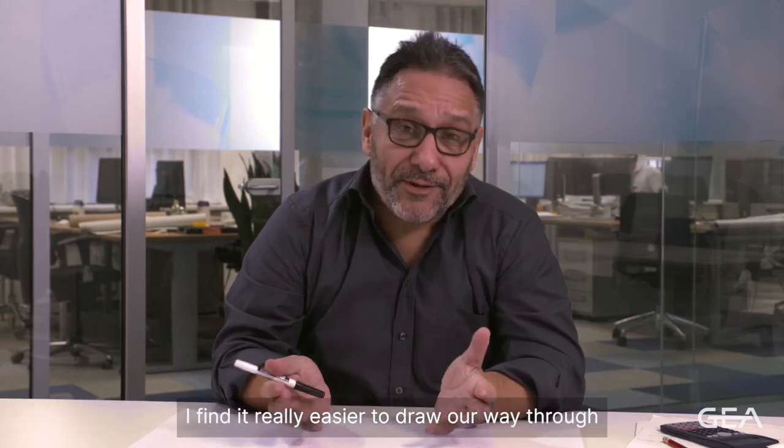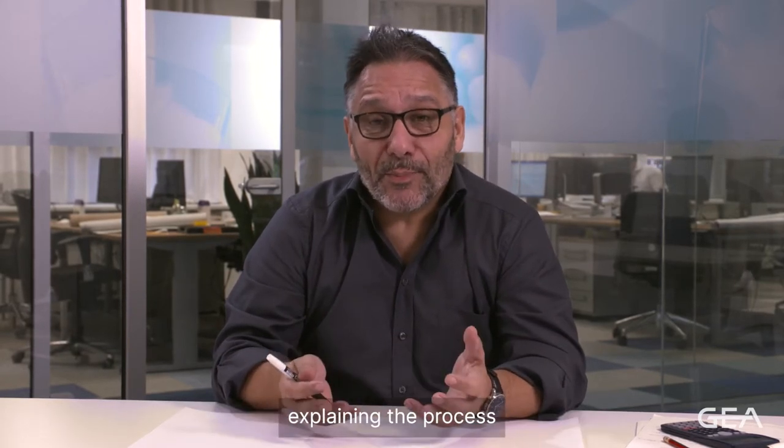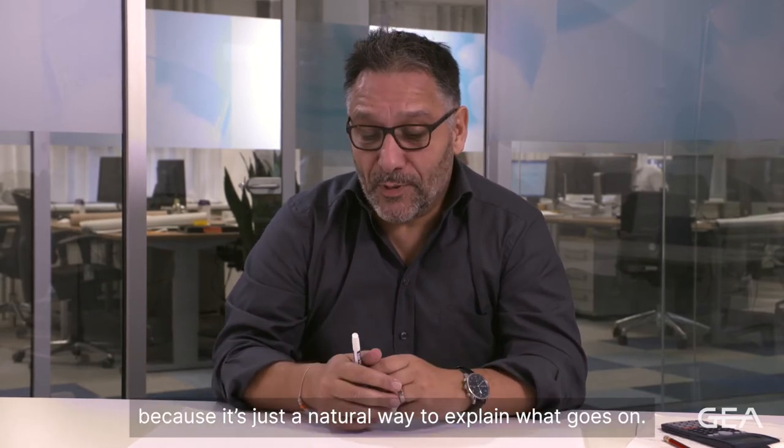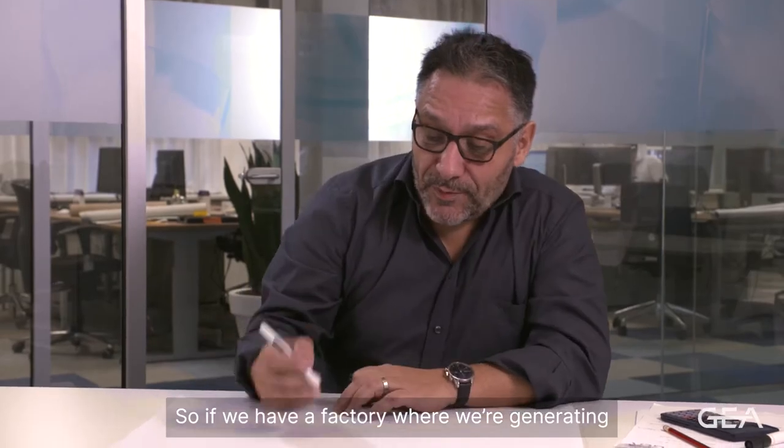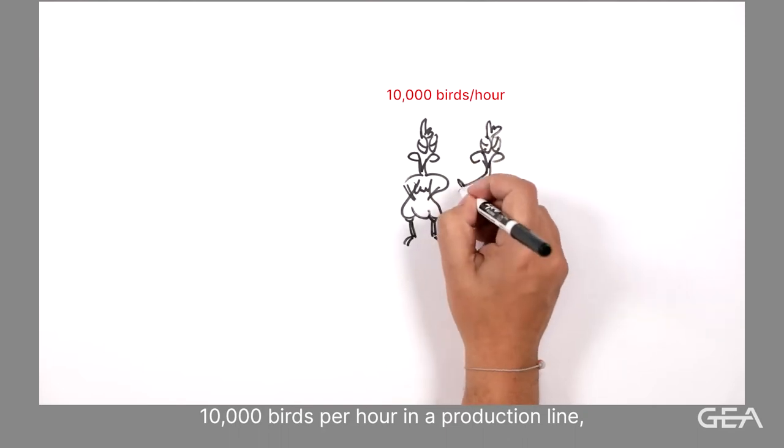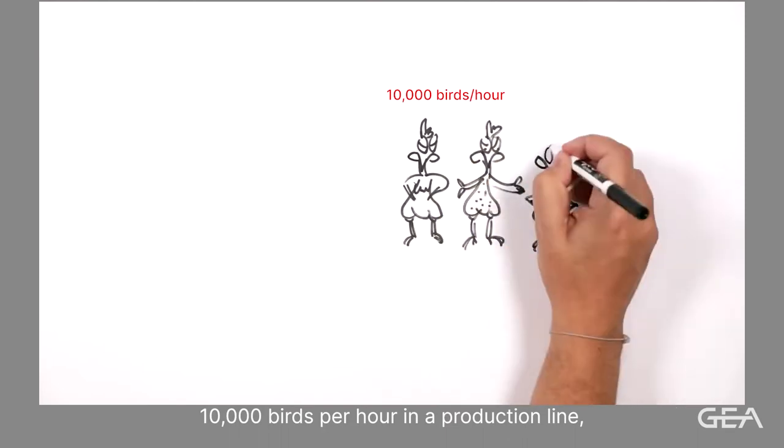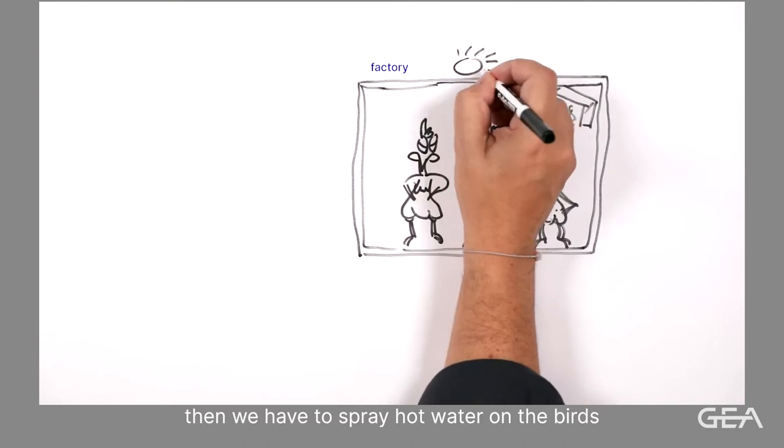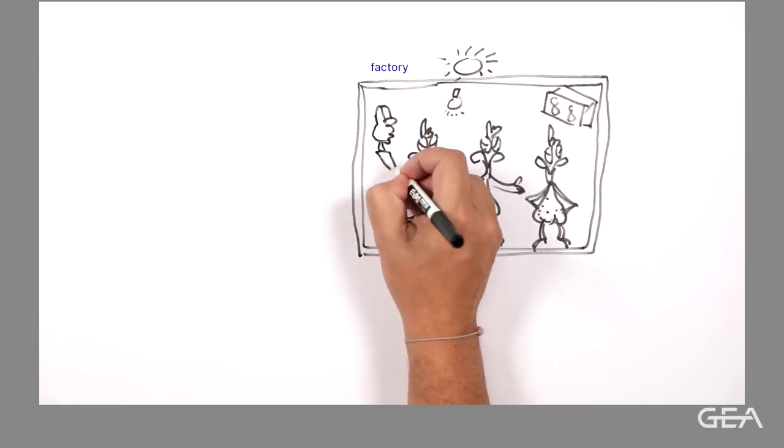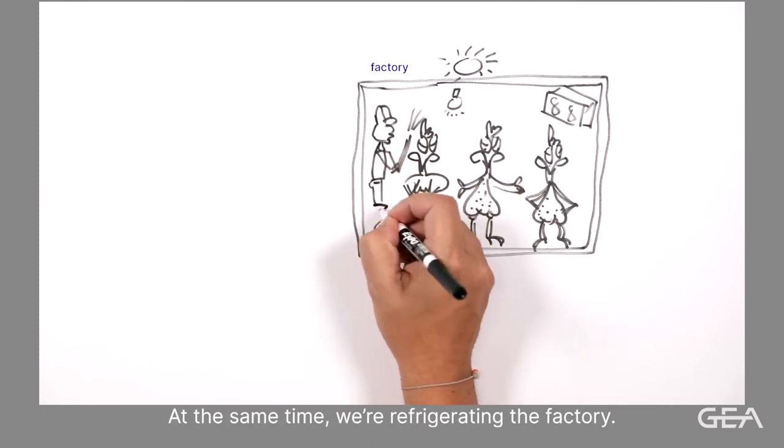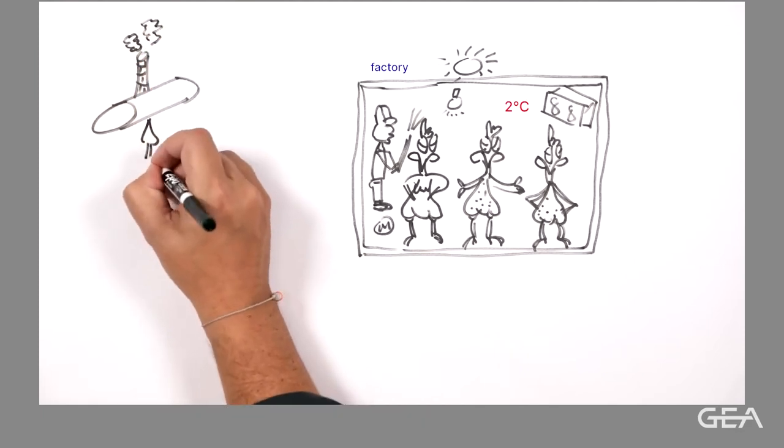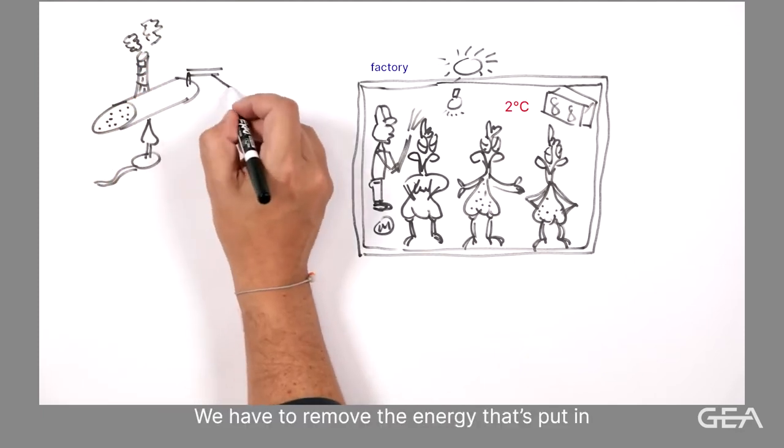So I find it really easier to draw our way through explaining the process because it's just a natural way to explain what goes on. So if we have a factory where we're generating 10,000 birds per hour in a production line, then we have to spray hot water at the birds for de-feathering them through scalders. At the same time we are refrigerating the factory.